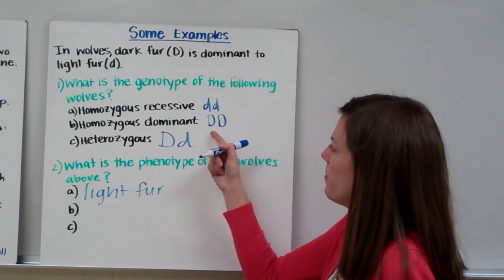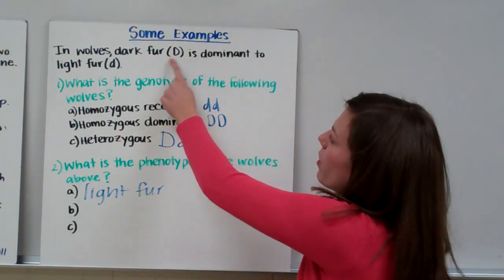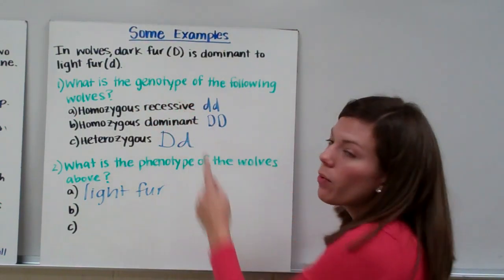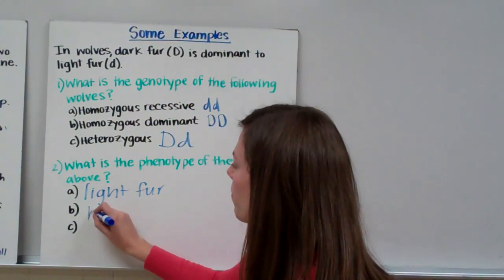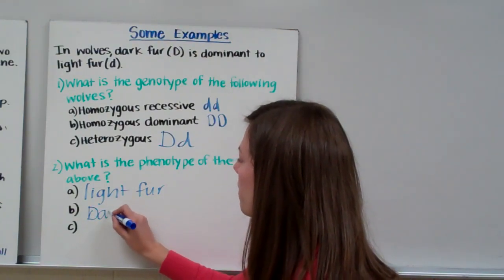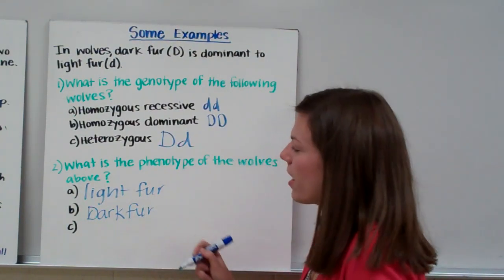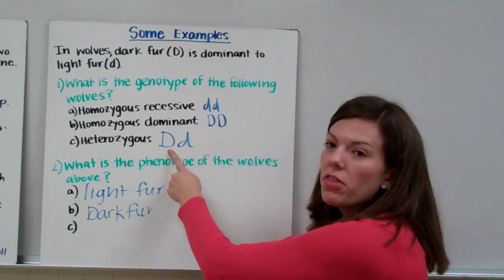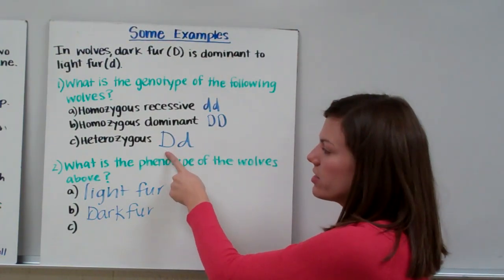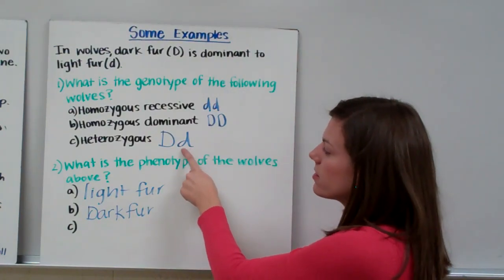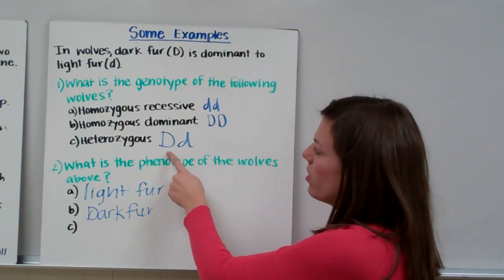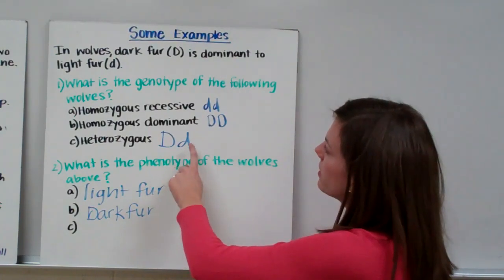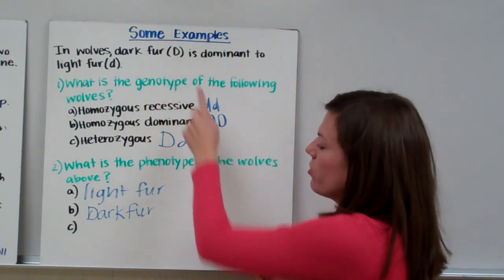The second one is big D big D. Big D codes for dark fur — that's our dominant allele. Since we only have big Ds, the wolf will have dark fur. The last one is trickier — it's heterozygous, big D and little D. Remember, the dominant allele, the big letter, is the one that shows up and masks the recessive allele. So since it has a big D and a little D, it is going to be dark-furred.